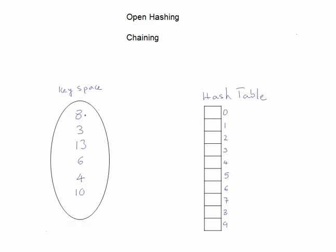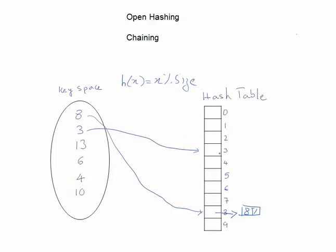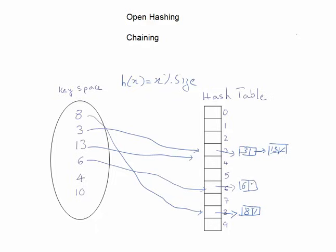The first method for resolving collision is chaining. When we map any key using the same hash function, it will be mapped to an index — for example, 8 maps to index 8. Instead of storing the element directly in the hash table, we add a chain (a linked list) at that index and insert the element there. Similarly, 3 is mapped to index 3, so we add a node to the chain and insert 3. When 13 is also mapped to index 3, we add another node to the chain and insert 13.